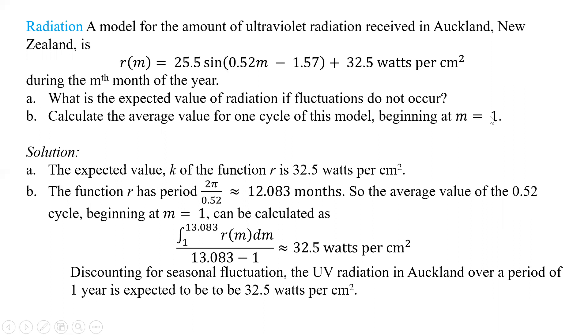We're supposed to calculate the average value for one cycle of this model, beginning at m equals one. You have to remember what is a period - a period is 2 pi over the b, or b is this one. If we remember that, that one's the b, so we take 2 pi divided by this, and we get 12.083, and those are months, because it's the nth month. We're going to take the integral from one to one plus this, which gives us 13.083 of this function, dm, divided by 13.083 minus one. Guess what, we get 32.5 watts per square centimeter. Discounting for seasonal fluctuation, the UV radiation in Auckland over a period of one year is expected to be 32.5 watts per square centimeter. So the expected value and average value notice, they came out to be the same.